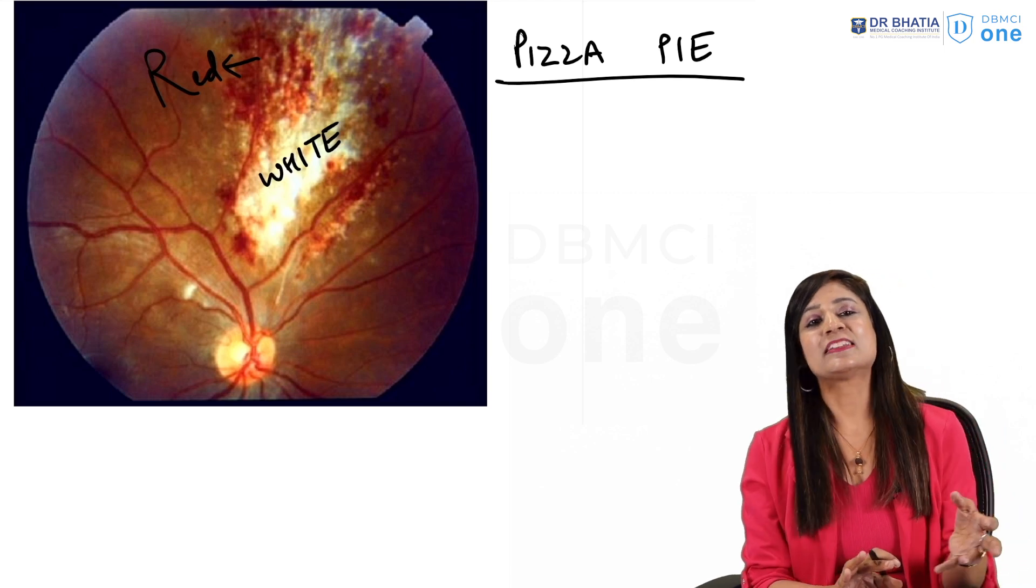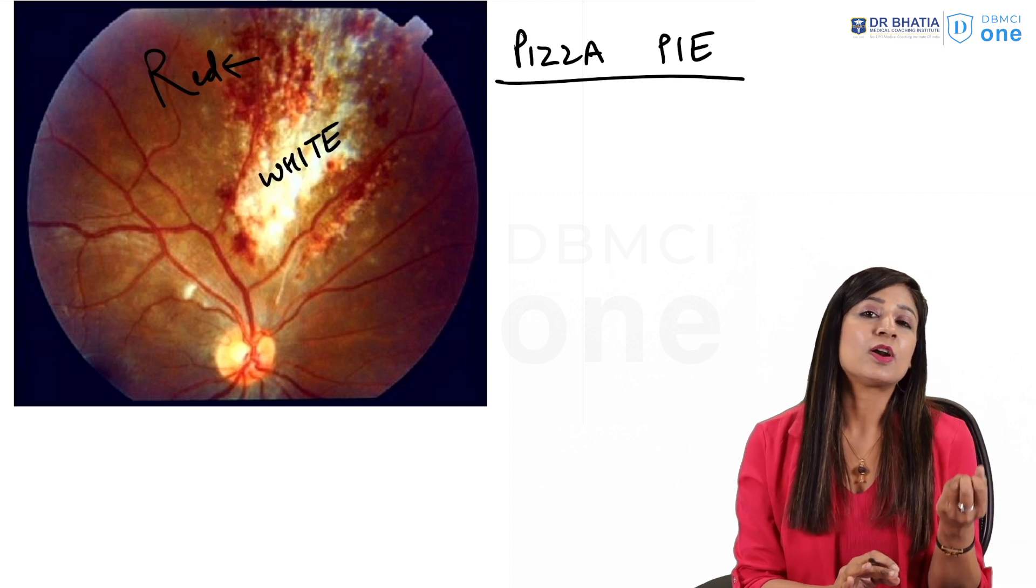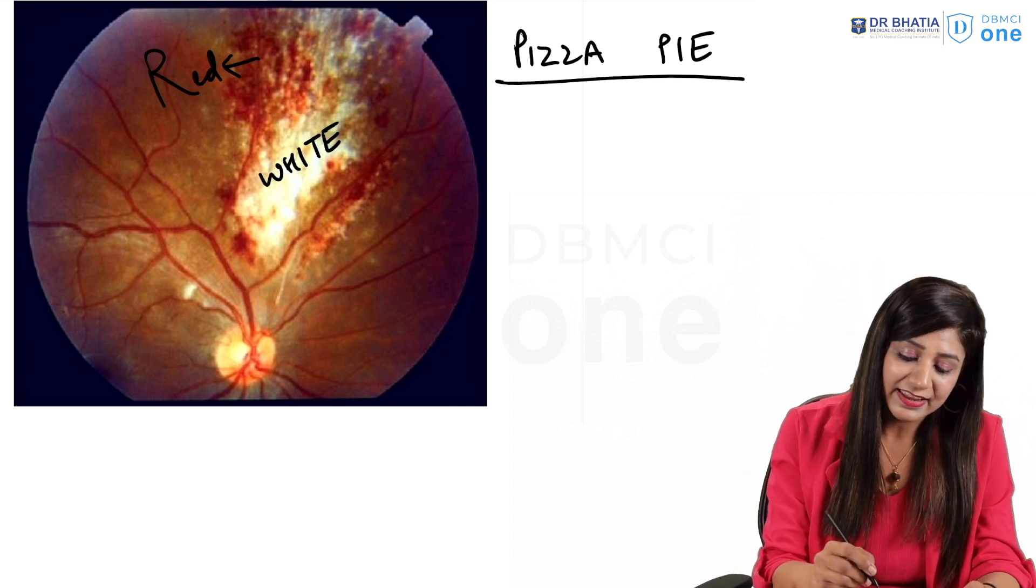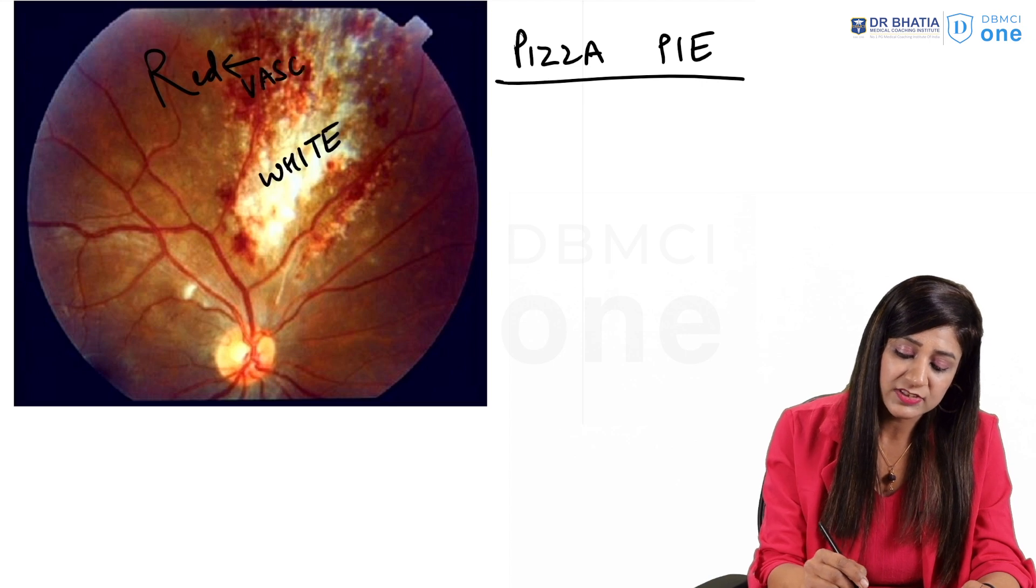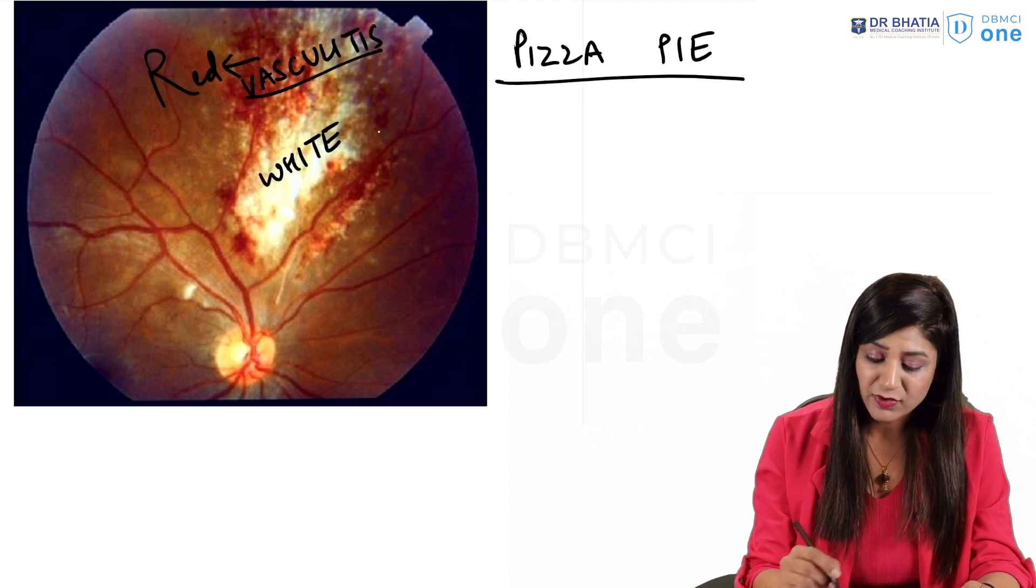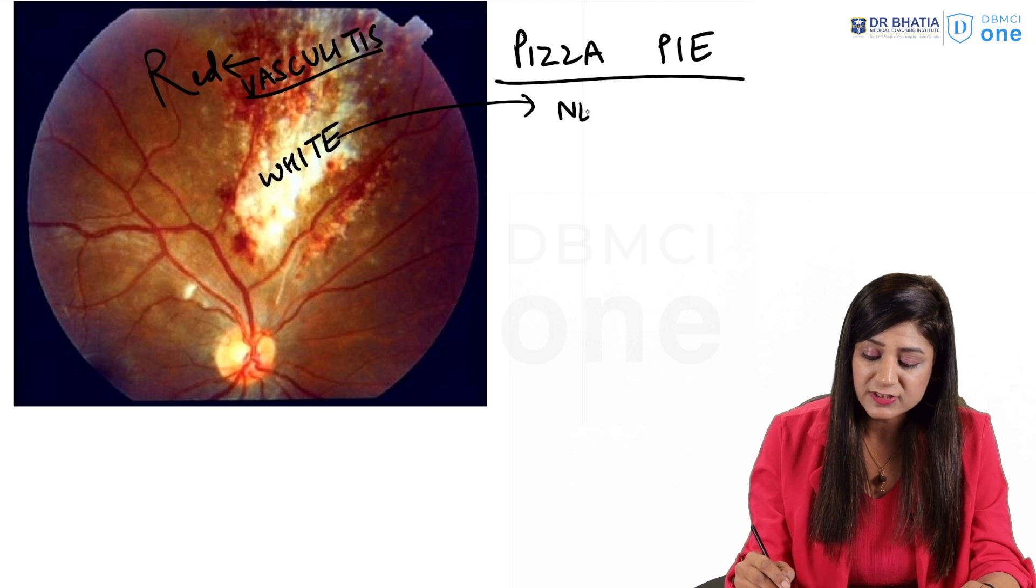But basically what are the representations? The red area is actually the vasculitis, so we have the areas of vasculitis and white is the areas of the necrosis. And this typical fundus is called as the pizza pie appearance.